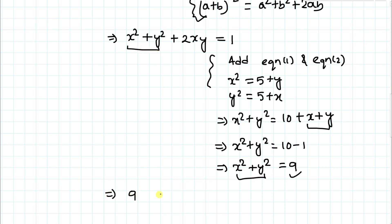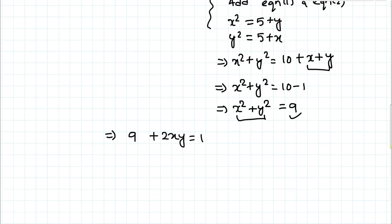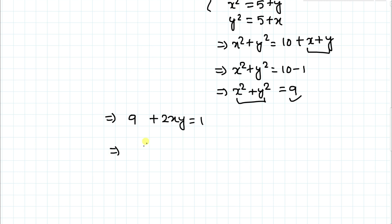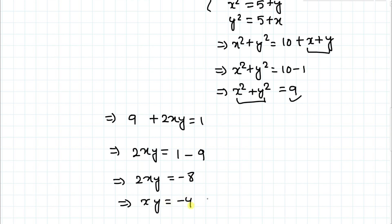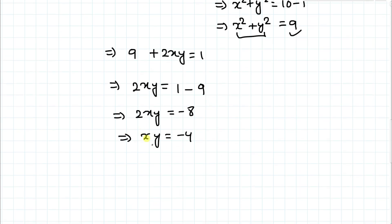Substituting x squared plus y squared equals 9 back in: 9 plus 2xy equals 1. This implies 2xy equals 1 minus 9, so 2xy equals minus 8, which gives xy equals minus 4. That is the value of xy we were asked to find.